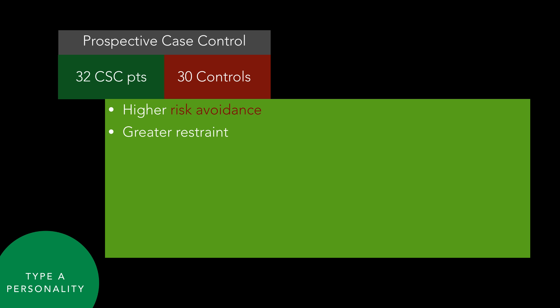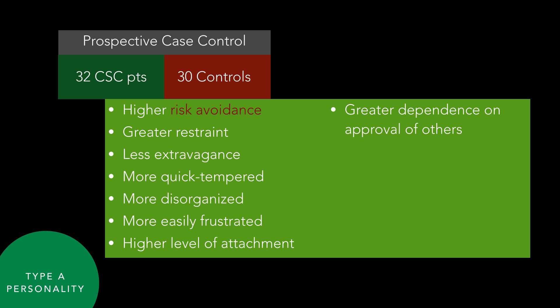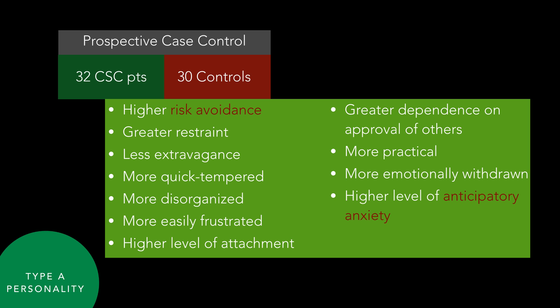More recently, Piskunovitz in 2013 conducted a Cloninger temperament and character inventory in a case-control method: 32 patients with CSC and 30 controls. She found that CSC patients had higher risk avoidance, greater restraint, less extravagance, were more quick-tempered and disorganized, more easily frustrated, had a higher level of attachment, greater dependence on approval of others, were more practical, more emotionally withdrawn, with higher anticipatory anxiety and a higher level of insecurity. Not very flattering, and not much you can change, so I don't really go into detail on character inventory with my central serous patients.